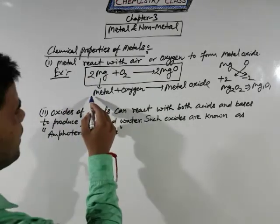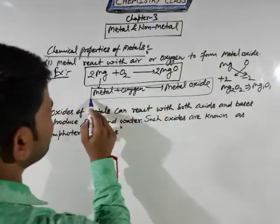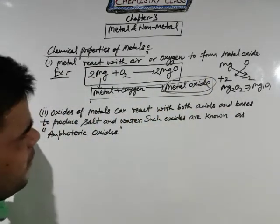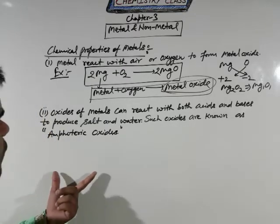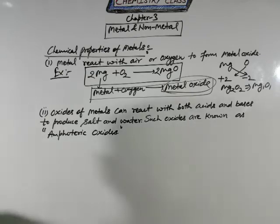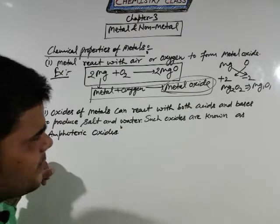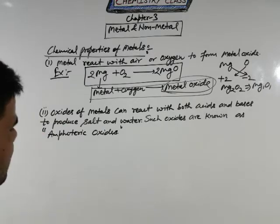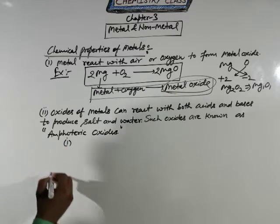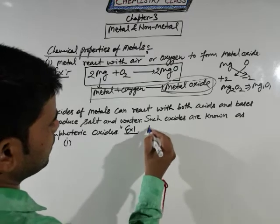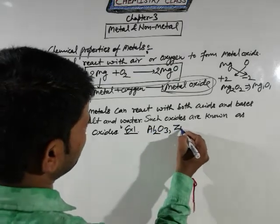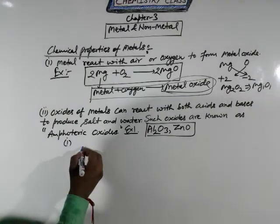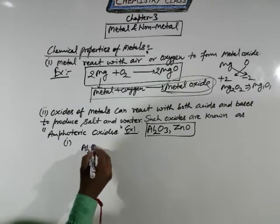So when our metal reacts with oxygen gas, it will produce metal oxide. That is the meaning of this point. The simple word equation is: metal + oxygen → metal oxide. Now we come to a very important point, which is amphoteric oxide. Those types of oxides that react with both acid as well as base are known as amphoteric oxides. The examples in your syllabus are Al₂O₃ and ZnO.